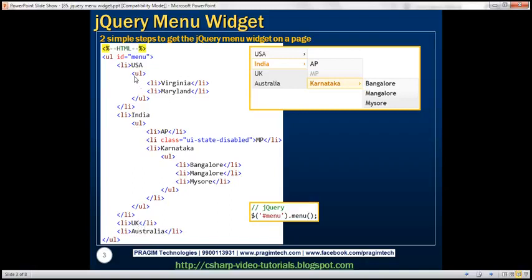So here we have an HTML structure with parent-child relationship — that's the first step. The second step is to write this one line of jQuery code. We are finding the unordered list element using its ID with the jQuery ID selector, finding the topmost unordered list element, and on that we're calling the jQuery UI menu function. With this HTML and this one line of jQuery code, we will get the jQuery menu.